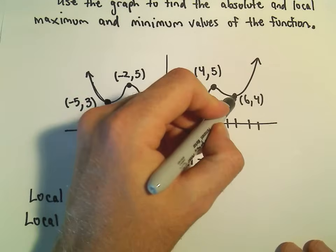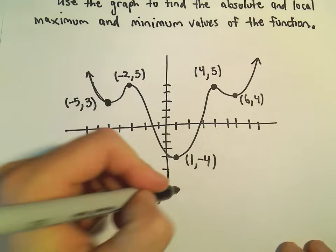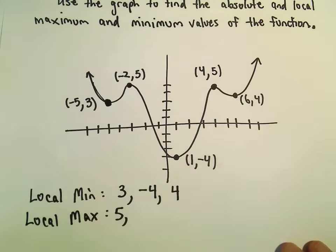And again, at this point 6 comma 4, you're at the bottom. So we could say at y equals 4, there's a local minimum.